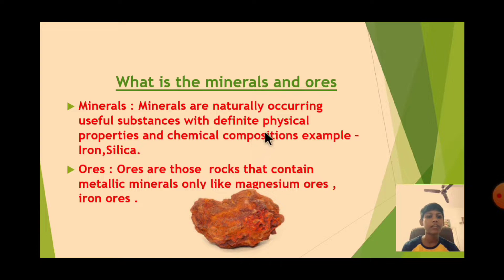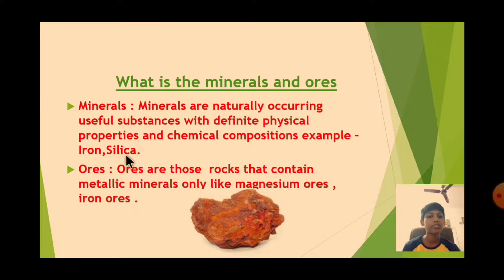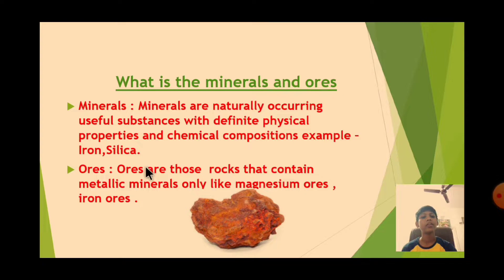Minerals are the naturally occurring useful substance with definite physical properties and chemical compositions. For example, iron, silica. We won't get the iron directly — we get them in the form of ores.